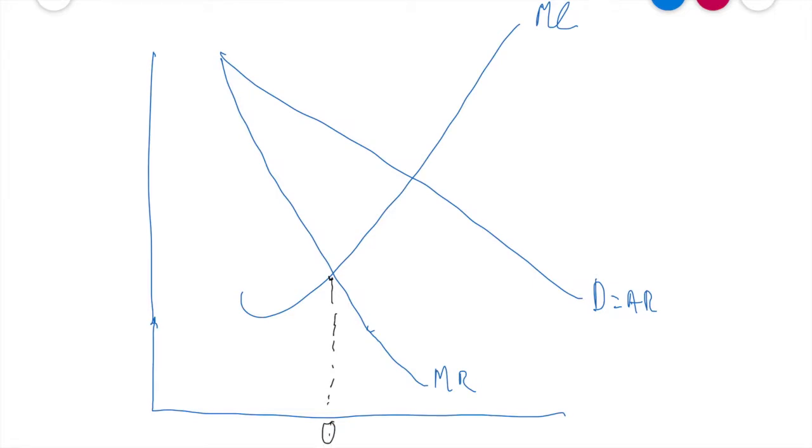So we drop down to find our quantity and we find our price by going up to our demand curve or average revenue curve and dotted across to find our price there. So that's the price and quantity that the monopoly operates at.